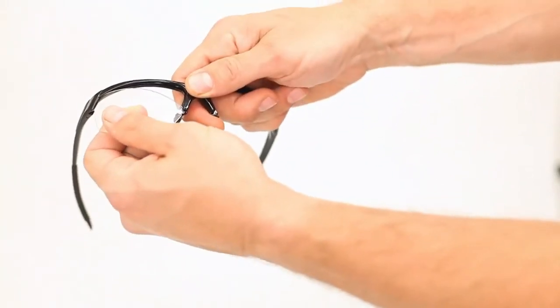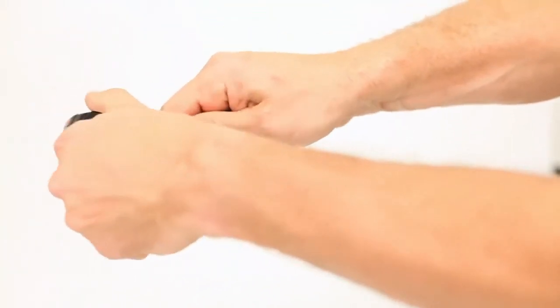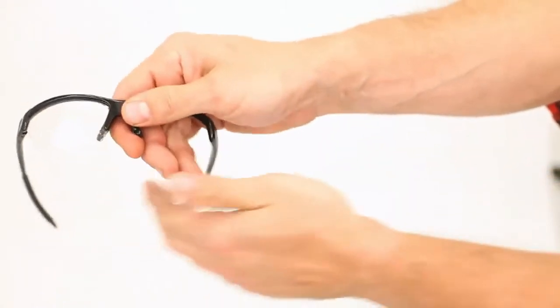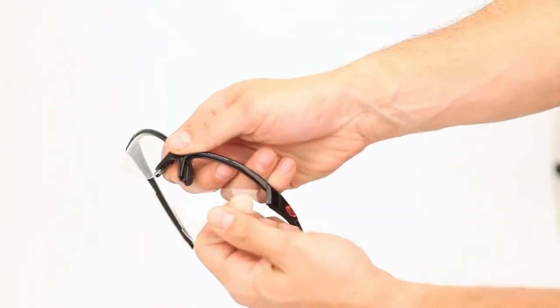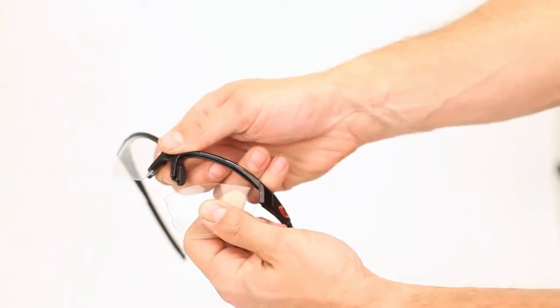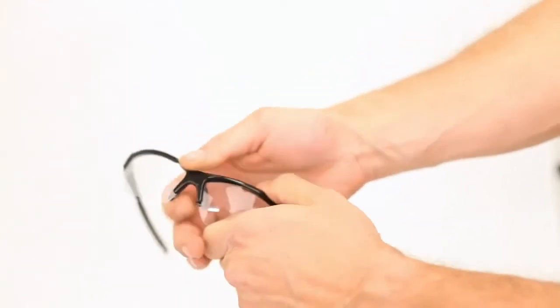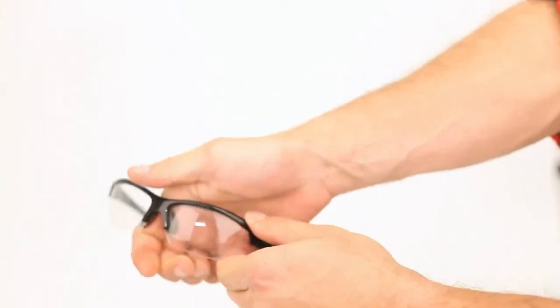To replace the lens, first insert the outside edge of the lens, which is the edge closest to the temple. Then rotate up and into the lens groove toward the nose bridge until the lens feels locked into place.